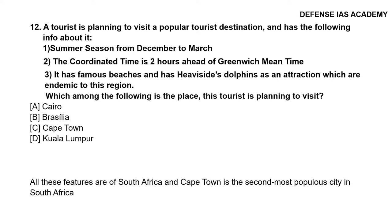Question 12: A tourist is planning to visit a popular destination with the following clues: summer is from December to March; the coordinated time is 2 hours ahead of Greenwich Mean Time; it has famous beaches and heavy-sighted dolphins as an attraction endemic to this region. The correct answer is option C, Cape Town. All these features are of South Africa, and Cape Town is the second most popular city in South Africa.